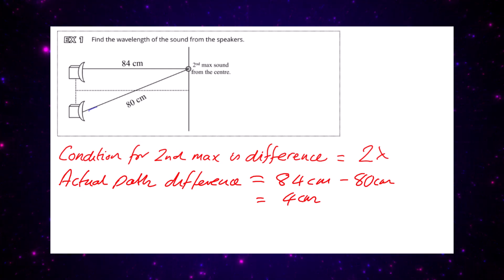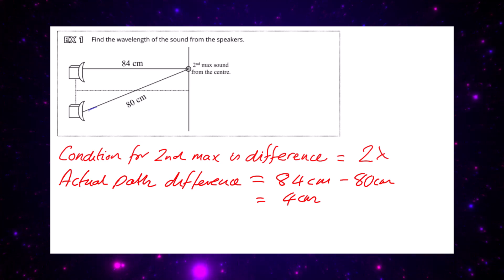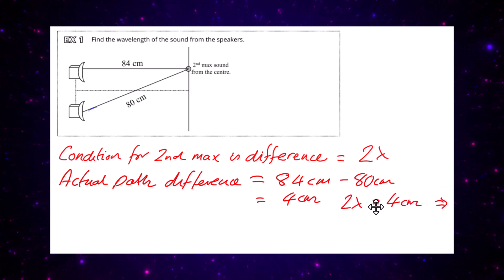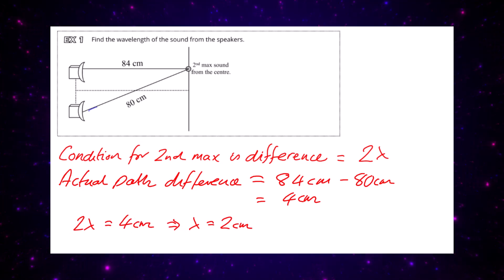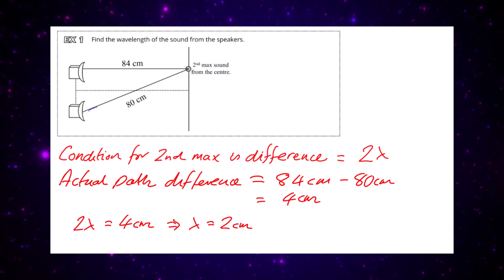So the actual path difference is 4 centimetres, and the condition is that the path difference must be two whole wavelengths. Therefore, two whole wavelengths must equal 4 centimetres, which implies that one wavelength is equal to 2 centimetres.